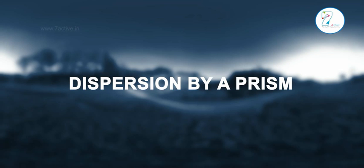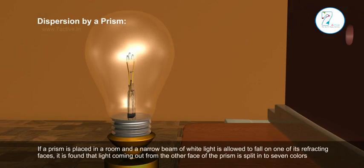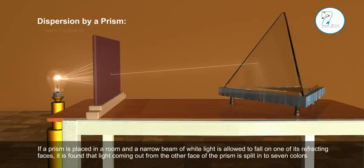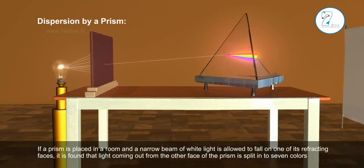Dispersion by a Prism. If a prism is placed in a room and a narrow beam of white light is allowed to fall on one of its refracting faces,